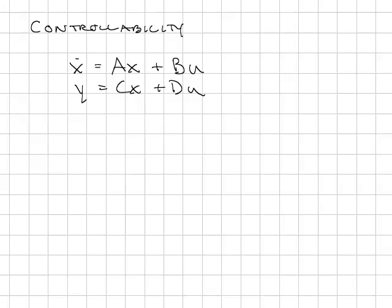State-space systems present us with an interesting problem that you don't see in transfer functions, and that's the idea of controllability and later something called observability. In controllability, we are concerned with whether the states of the system can be changed with the input.